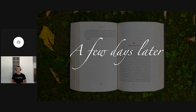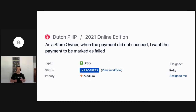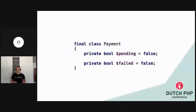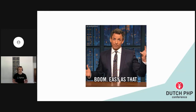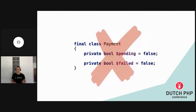However, a few days later in the next sprint, there was another task. This time, when the payment did not succeed, the store owner wanted to mark the payment as failed. The first thought was to add another flag — boom, easy. But during the code review, some peers mentioned that perhaps it's not the best implementation. What will happen if pending is false and failed is false? We can assume it's a new payment. But what if both flags are true? Is it really not error-prone?